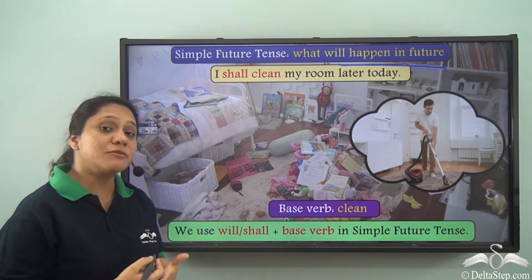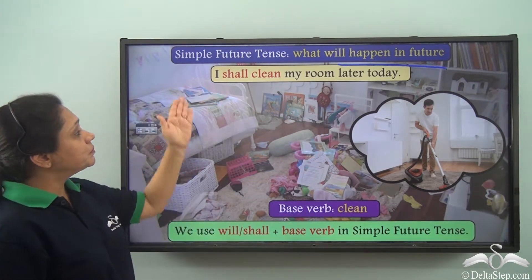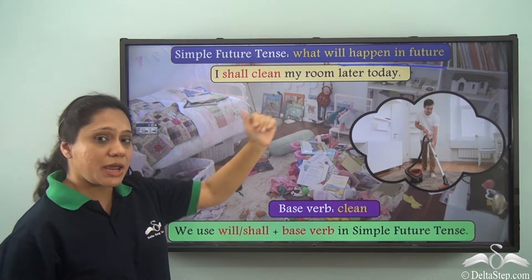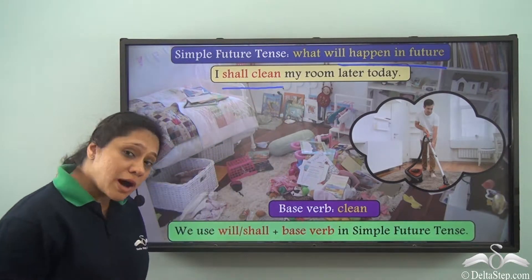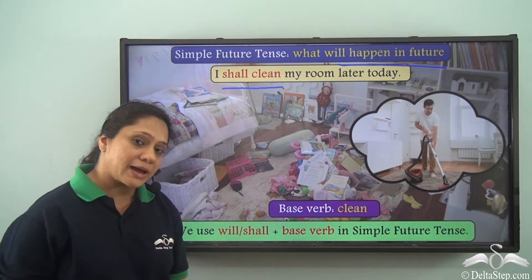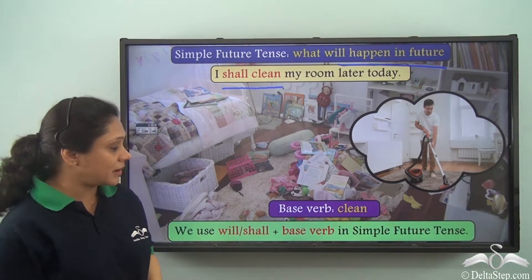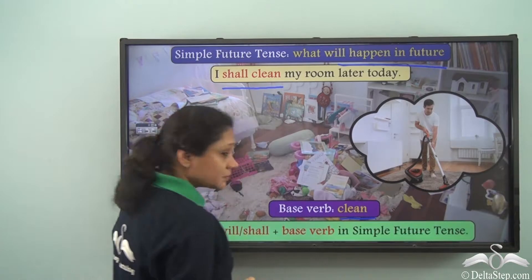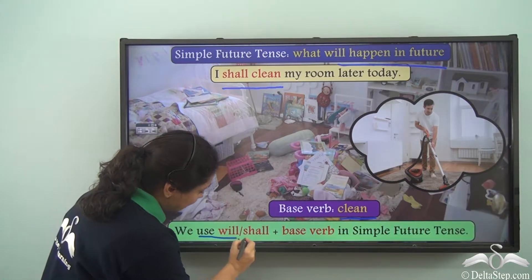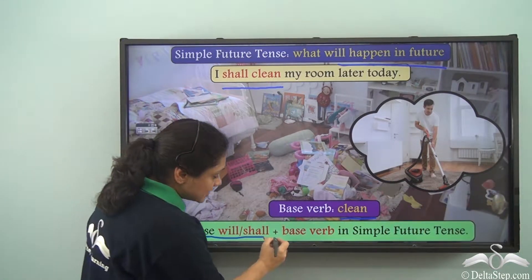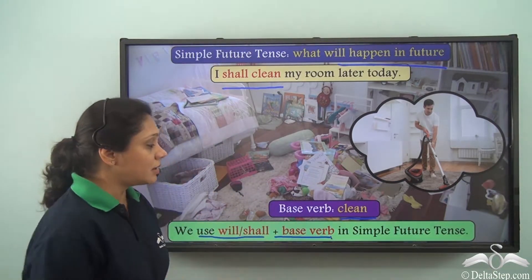Now how do we form the verbs in the simple future tense? In the sentence 'I shall clean my room later today,' the verb is 'shall clean.' This is showing us a future action. The base verb is 'clean.' To form a verb in the simple future tense, we use will or shall plus the base verb.